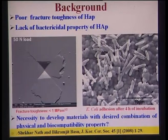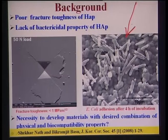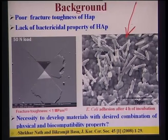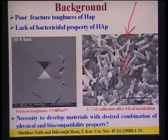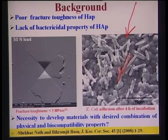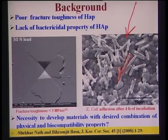This SEM image is taken after four hours of incubation of E. coli bacteria on the hydroxyapatite surface. E. coli is a gram-negative bacteria with a typical aspect ratio of 5 to 10 — it is a rod-like bacteria — and these bacteria are happily surviving on the material surface, confirming that hydroxyapatite does not have good antimicrobial property.